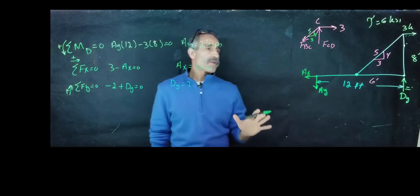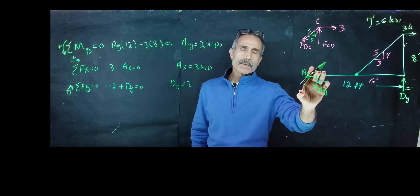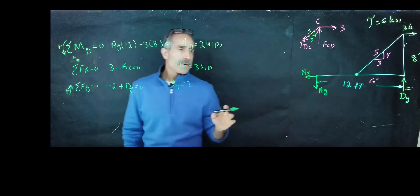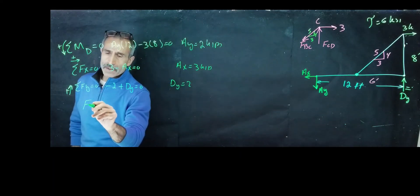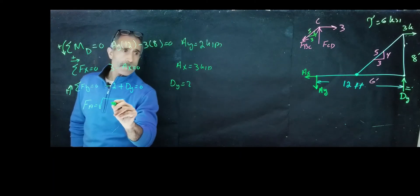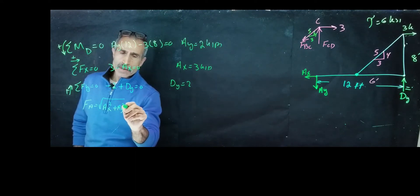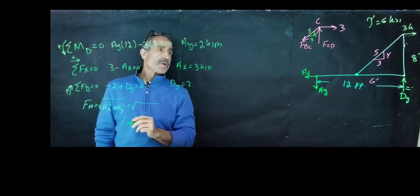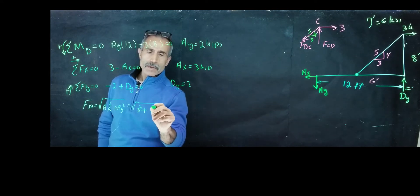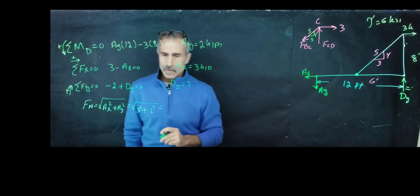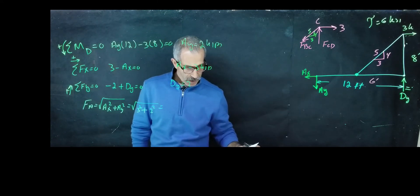Good. But now we have our final reaction. We'd like to know what the diameter of this pin is. So to find the diameter of that pin, one of the first things I want to do is find out what Fa is going to come out to. So Fa should come out to square root of Ax squared plus Ay squared, which comes out to 3 squared and 2 squared, and that comes out to 16. I have that as 3.6 kips.